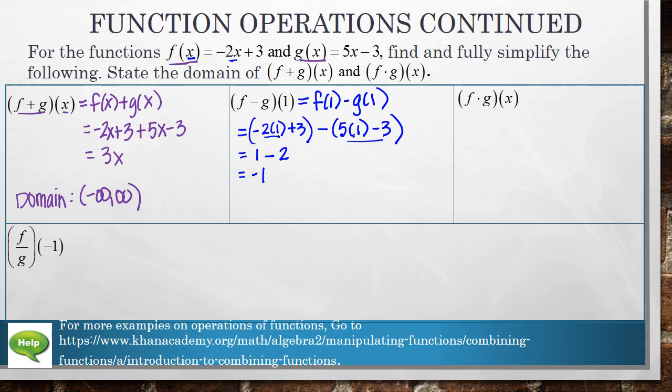Looking at this next one, f times g of x. So that means f of x times g of x. f of x is negative 2x plus 3 times g of x, which is 5x minus 3.